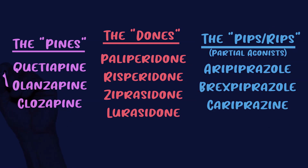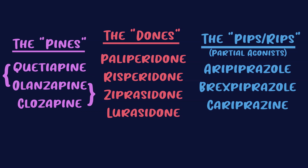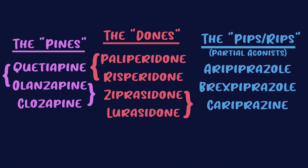For example, quetiapine and olanzapine are two drugs indicated in treatment-resistant depression. Olanzapine and clozapine have the absolute worst weight gain, but clozapine is the most effective and olanzapine is typically viewed as the second most effective. For the dones: paliperidone is the metabolite of risperidone. Ziprasidone and lurasidone are relatively the best for weight, and both require food to increase bioavailability. For the pips and rip, brexpiprazole and cariprazine are more antagonistic than aripiprazole, and cariprazine also blocks D3. You can pick up on these patterns once you view these drugs as different classes.